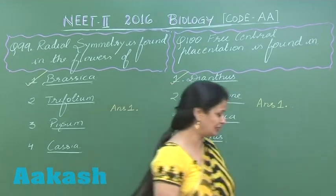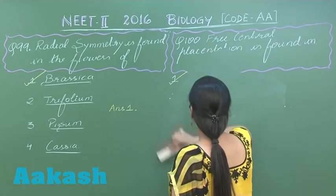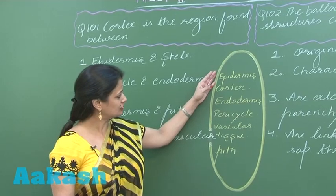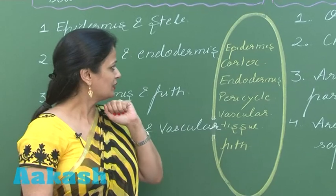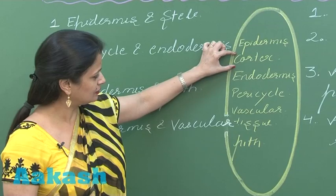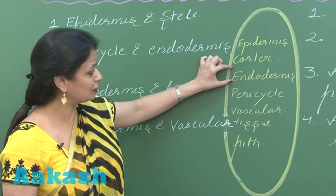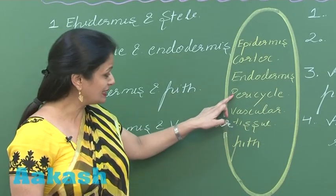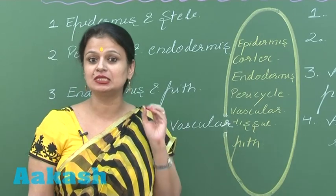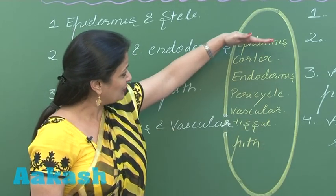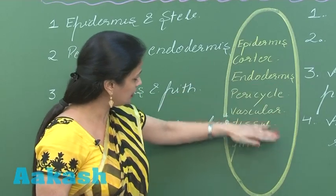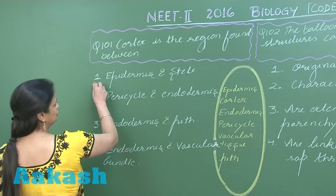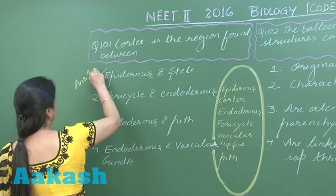Question 101: The cortex is the region found between which tissues? The sequence from outer to inner in a root is: epidermis, then cortex, then endodermis as the innermost layer of the cortex, followed by pericycle, vascular tissue, and pith — these three constitute the stele. The cortex is the part present between the epidermis and the stele. So the right answer is option number one.